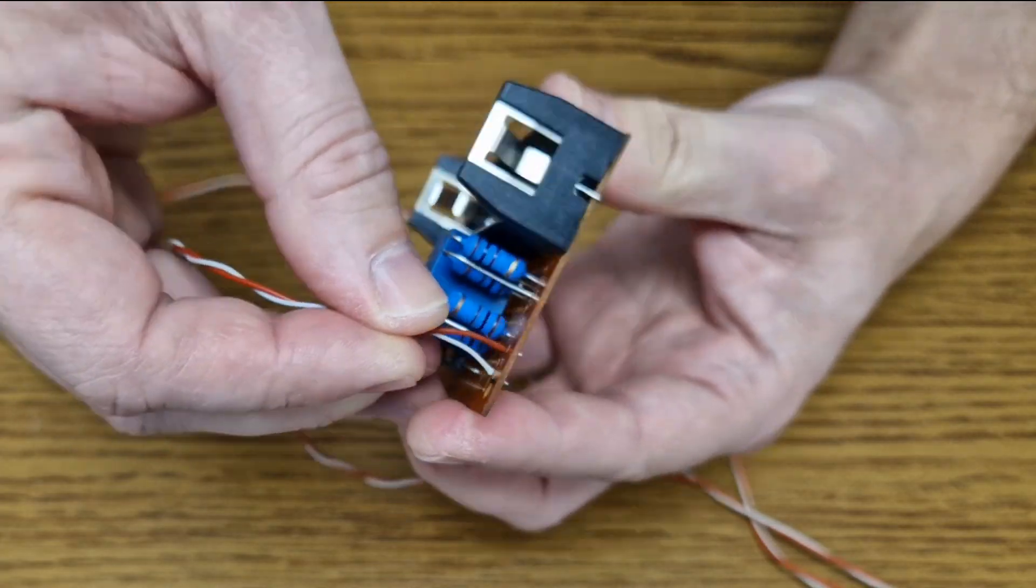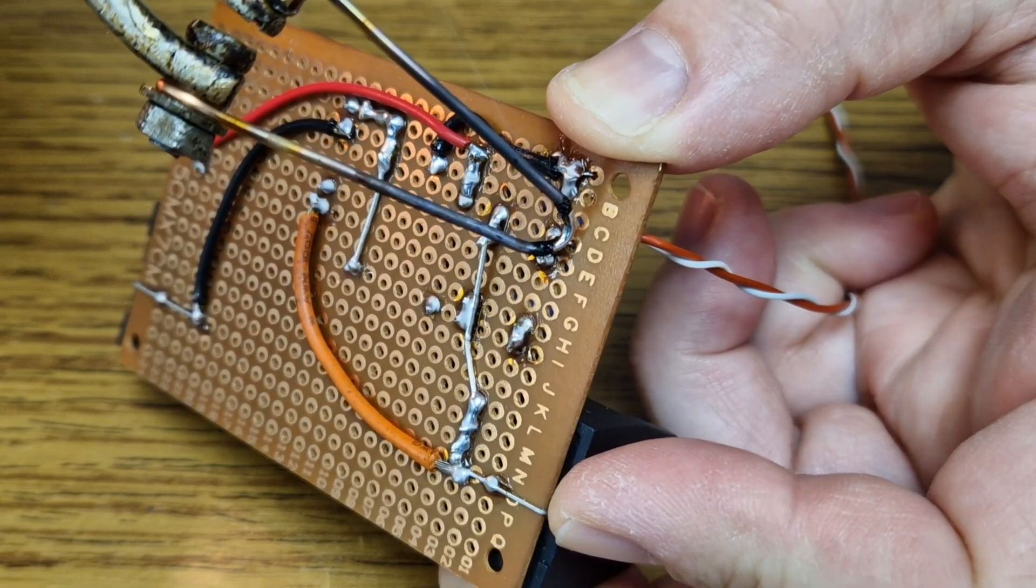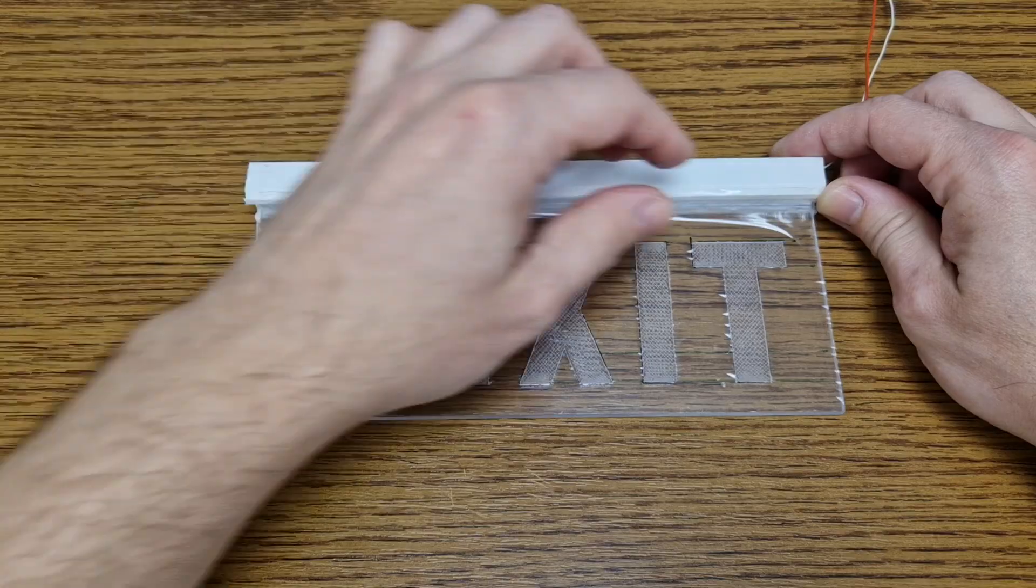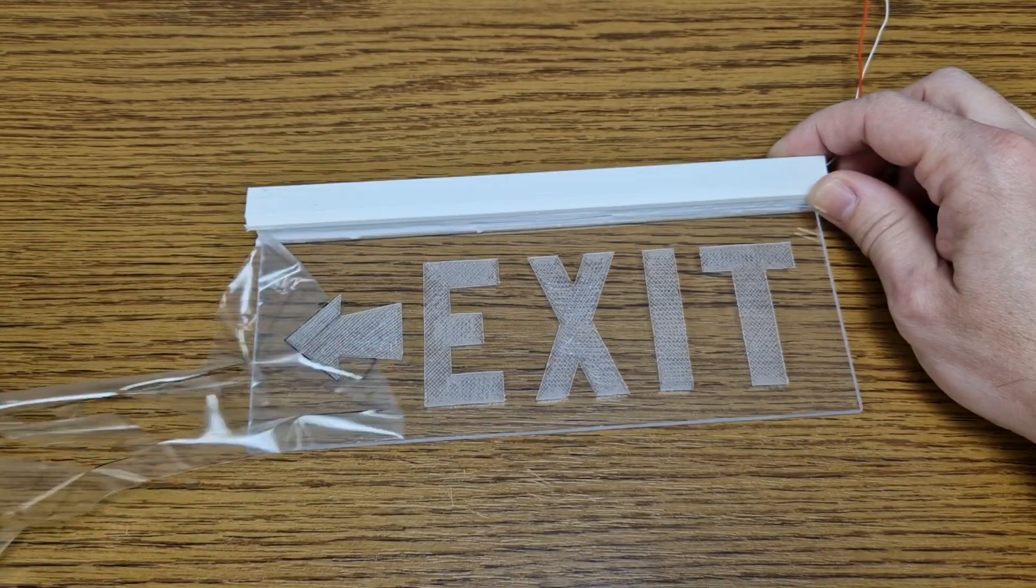The LED panels will be connected to the circuit board with long wires. Now I can finally remove the protective film.